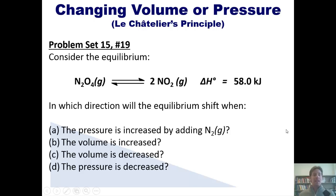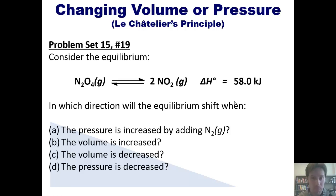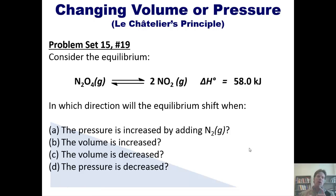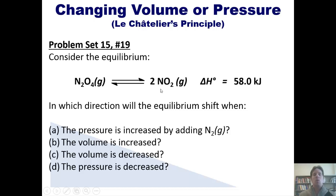In the first scenario, N2 gas has been added. Now, N2 is not one of the gases in this equilibrium reaction, so it won't directly increase the amount of N2O4 or NO2. But will it affect pressure? You're a molecule in a container and suddenly more N2 joins — what happens to the pressure you feel? It goes up. So you want to decrease the pressure by decreasing the number of gas molecules. Looking at this equilibrium, there's one mole of gas on the left and two moles on the right. Introducing more N2 will shift the equilibrium to the left, decreasing the total number of gas moles.